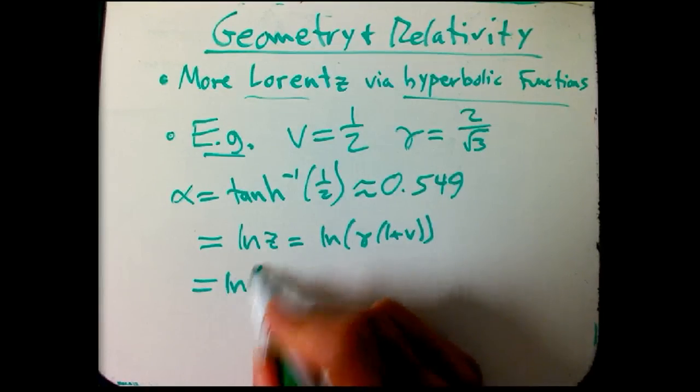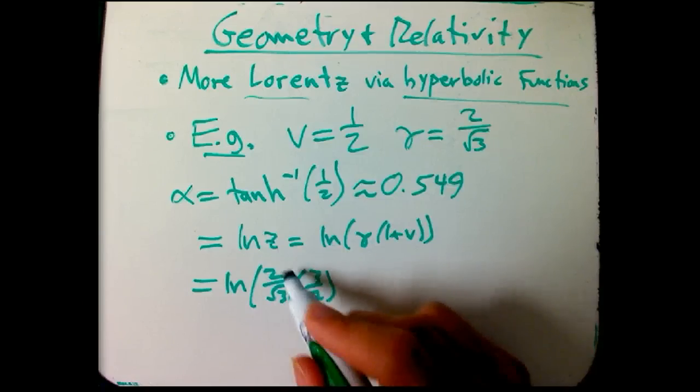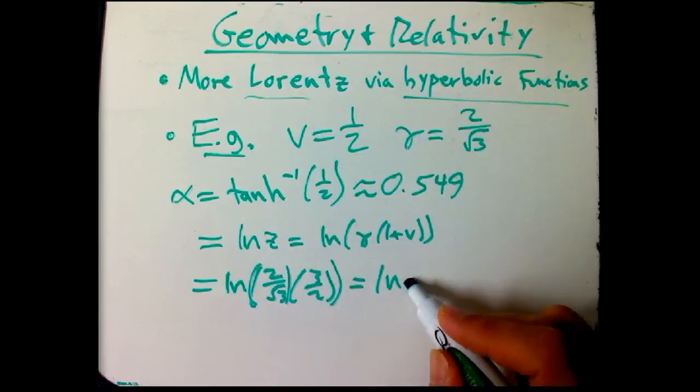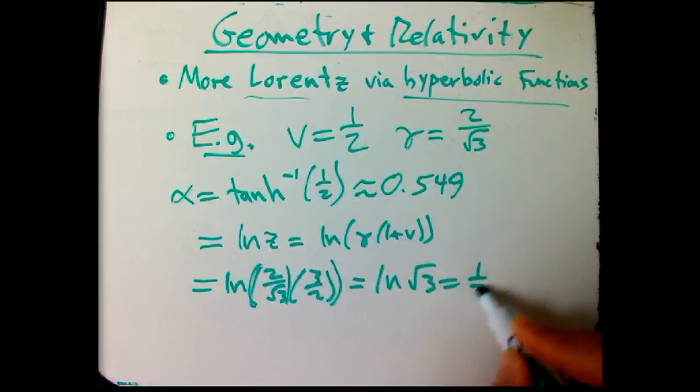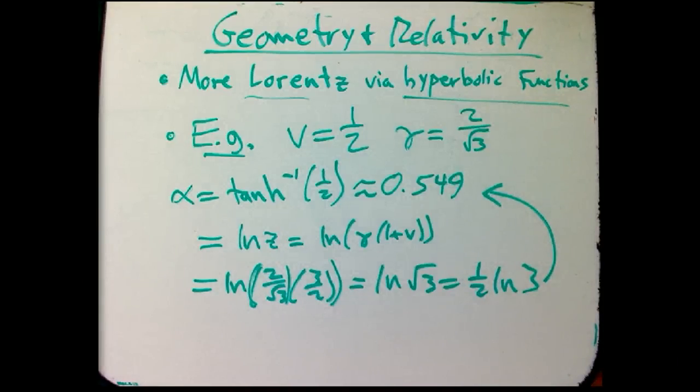And so that's ln of 2 over root 3 times 3 halves, or ln of, it all cancels down to root 3, or just a fairly simple number, 1/2 ln 3. And if you calculate that, again, it's a little bit more than 1/2.